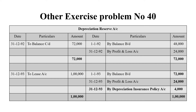In the Depreciation Reserve Account for the third year: when the debit balance is brought down, it will be on the credit side. By balance brought down is 48,000. On the other version, we pay the premium amount — that is 24,000. So the total is 72,000, balanced on the debit side. Grand total is 72,000.